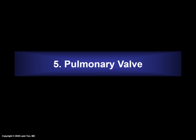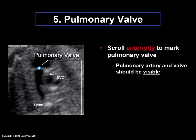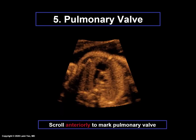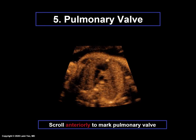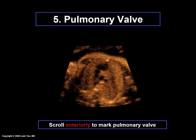The fifth structure to be marked is the pulmonary valve. Scroll as anteriorly as possible to mark the pulmonary valve — the artery and valve should still be visible. Do not scroll too much because then the pulmonary artery and valve will start to disappear. The valve should be closed and appear as a line; then mark the middle of the valve. FINE has automatically presented the plane to mark the pulmonary valve, but the goal is to still scroll anteriorly. If one scrolls too much and the pulmonary artery and valve disappear, scroll the opposite way to find the correct plane.